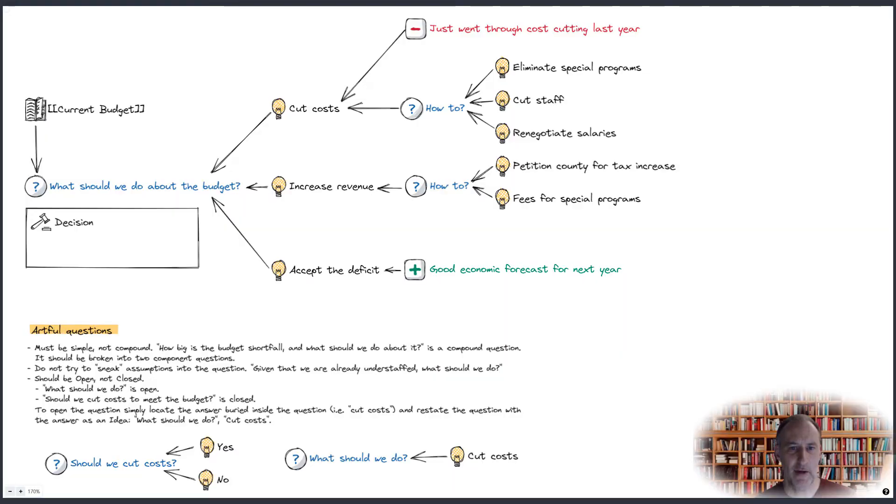Visualized as a graph, an IBIS grows into a network as more issues are posted and debated. As a simple example, the figure shows a small IBIS map for a meeting of a school board faced with a budget shortfall. Generally, these maps are constructed from left to right, thus the root cause in this map is what should we do about the budget. There are three possible answers and three additional questions about the first two ideas.